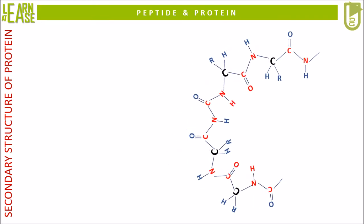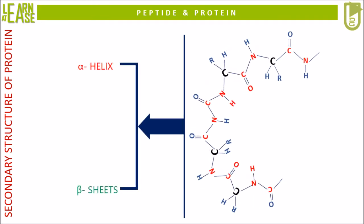Secondary structure of peptide is broadly classified into alpha helix and beta sheets. Beta sheets can further be classified into parallel and anti-parallel sheets.